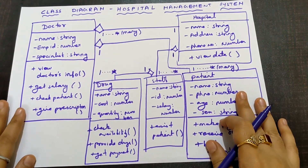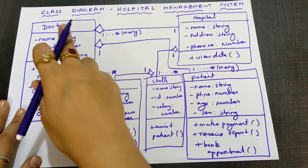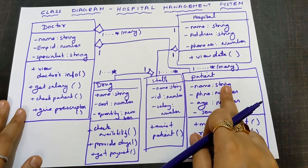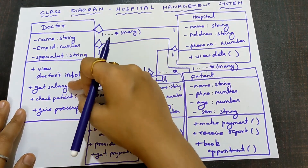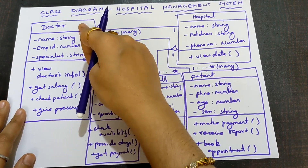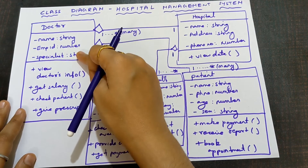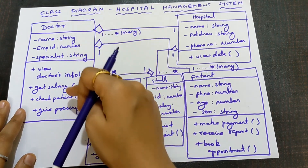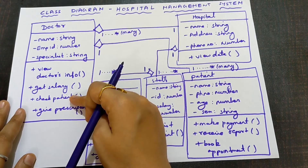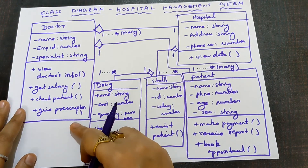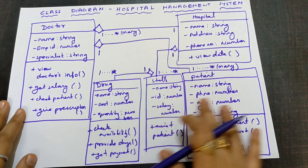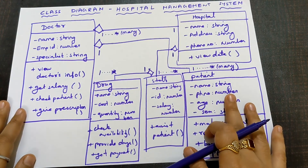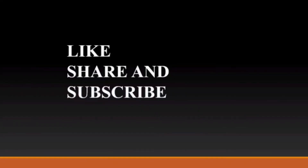This is the final class diagram for hospital management system. The steps are: first, identify the classes and write at least four to five; second, divide each class into three parts — object name in the first part, attributes in the second, and operations in the third; and finally, join all classes by association. Thank you. If you like this video, please like, subscribe and share it with your friends.